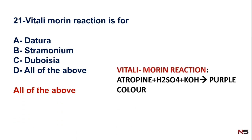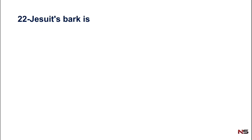What is the Vitalimorine reaction? In this reaction, a tropane alkaloid is treated with sulfuric acid in the presence of potassium hydroxide, which gives a purple color. Any tropane alkaloid treated with sulfuric acid in the presence of potassium hydroxide giving a purple color is the Vitalimorine reaction.